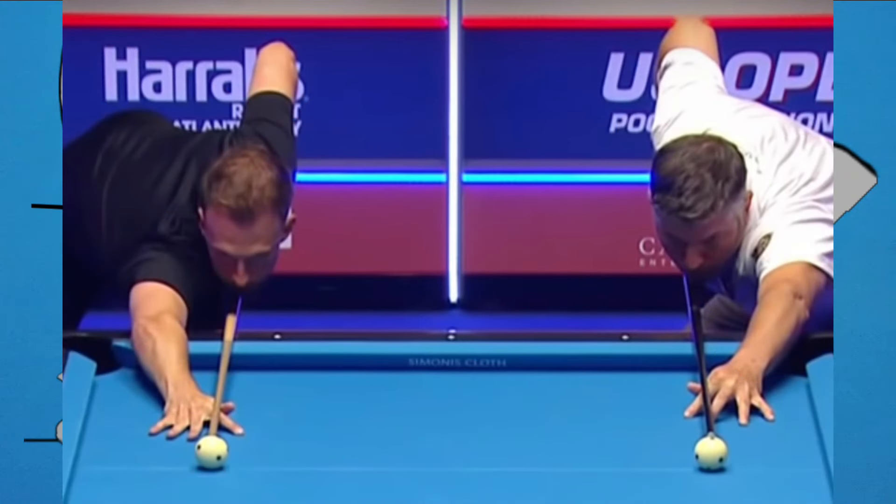This is Judd Trump on the left and Joe McGee on the right, preparing to lag for break at the 2021 US Open. Judd's head alignment and stance is an example of what is generally considered textbook. His head is perfectly aligned on the x, y, and z-axis. His shoulder and elbow are also perfectly aligned with the cue stick.